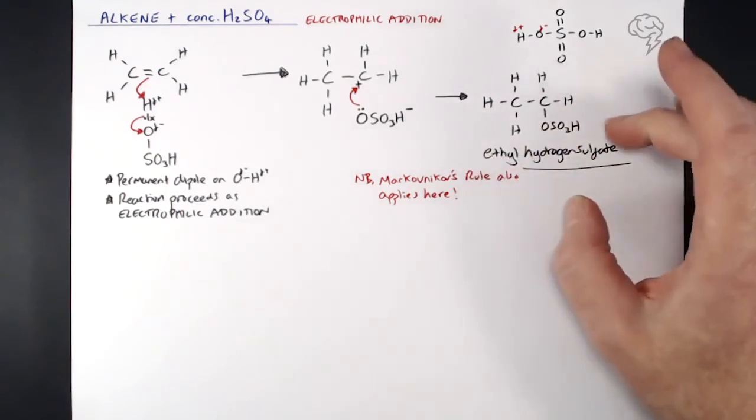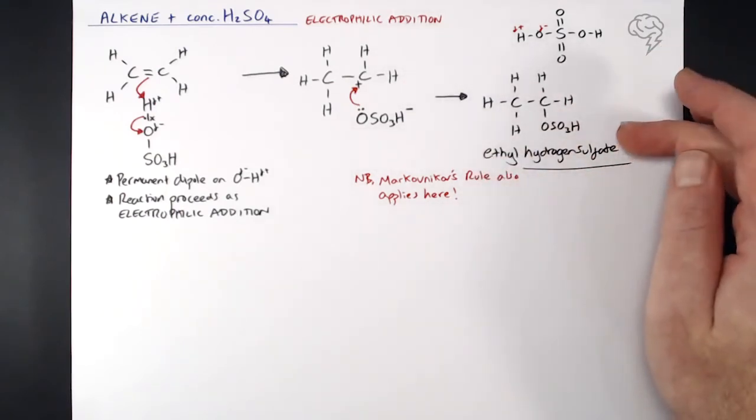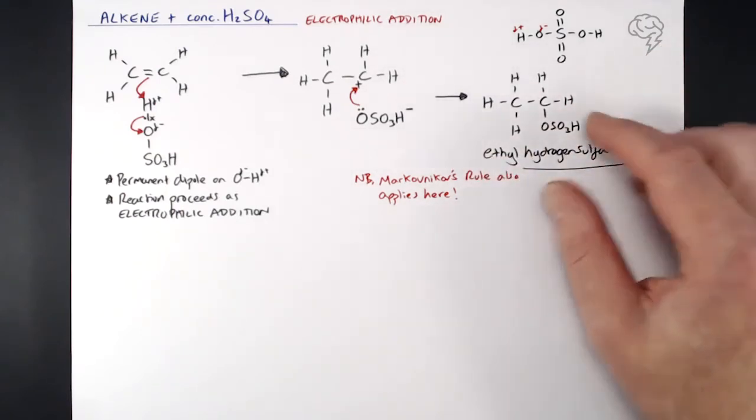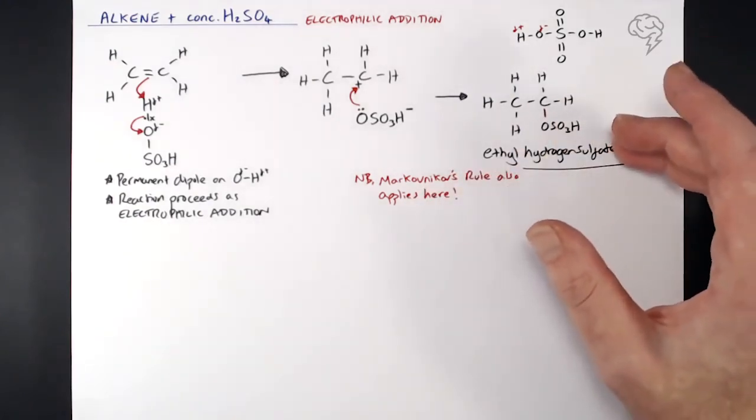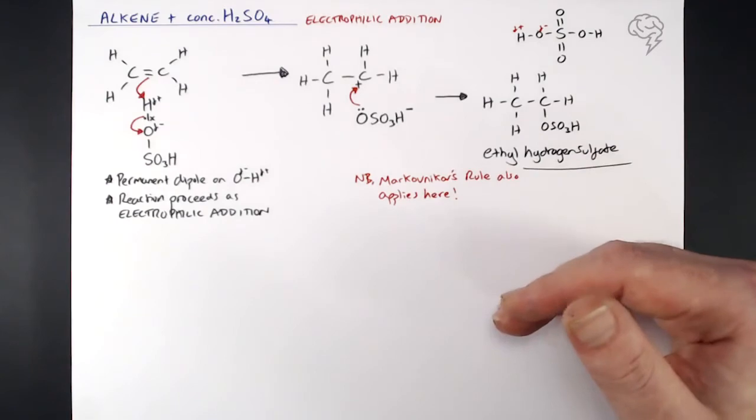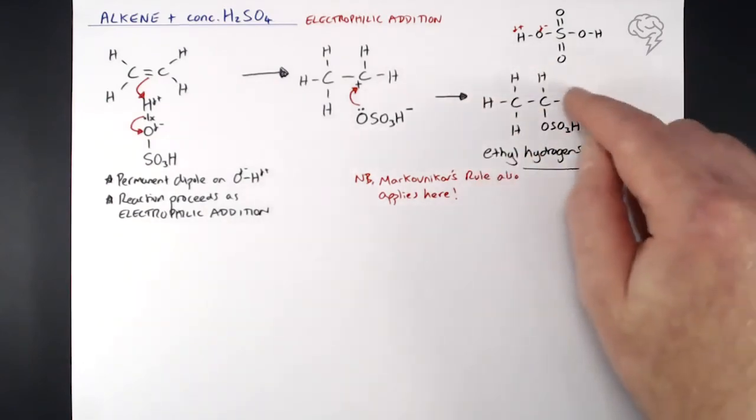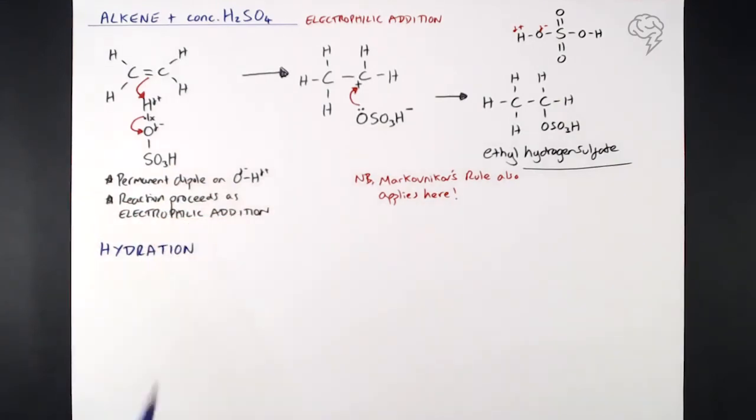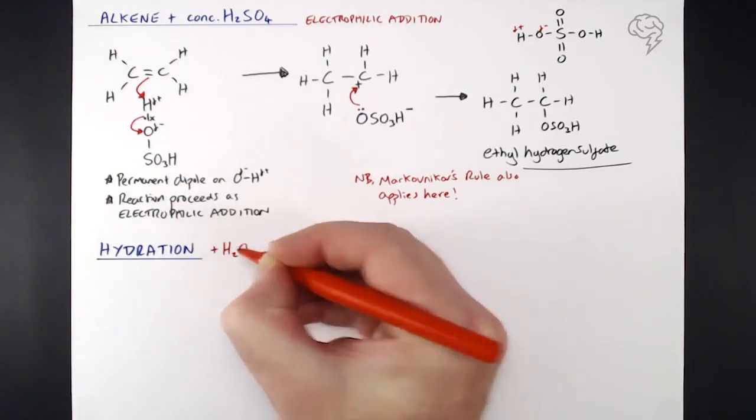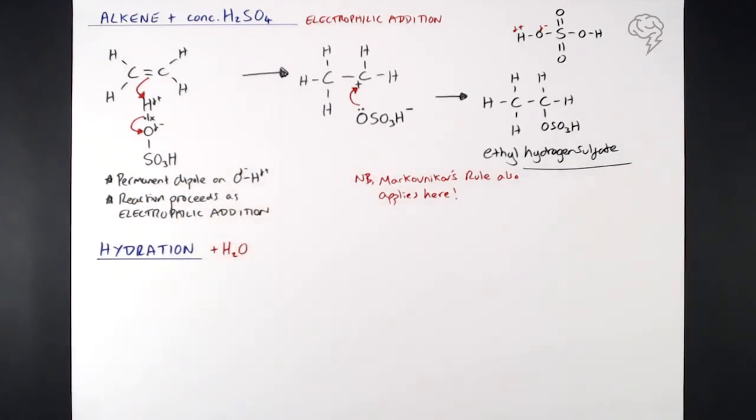So now we've made this molecule here, this ethyl hydrogen sulfate. You know what, this isn't very useful to us. The other part of the process here is a secondary reaction that can actually occur from this. That secondary process here is known as hydration, and you guessed it, that's basically adding water to it. But what's the point of this? What are we actually going to be making if we hydrate this alkyl hydrogen sulfate?